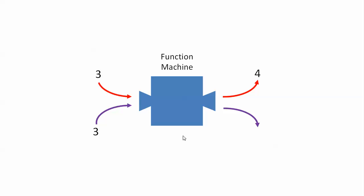Now suppose that we fed a 3 into the machine again. What would you expect to get out? We would expect to get out 4. If we put the same input in, we would expect to get exactly the same output out. That makes this a predictable machine — we would get nothing out except for 4.